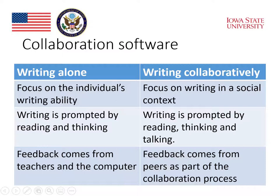Third, if we are thinking of writing alone, feedback comes from teachers and from the computer after the student writes something — the students are on their own while they are writing. In collaborative writing situations, feedback comes from peers as part of the collaboration process. Feedback can still be obtained from teachers and computers, but the collaborative writing process naturally brings about a lot of feedback during the process of conceptualizing and drafting, as well as revision.